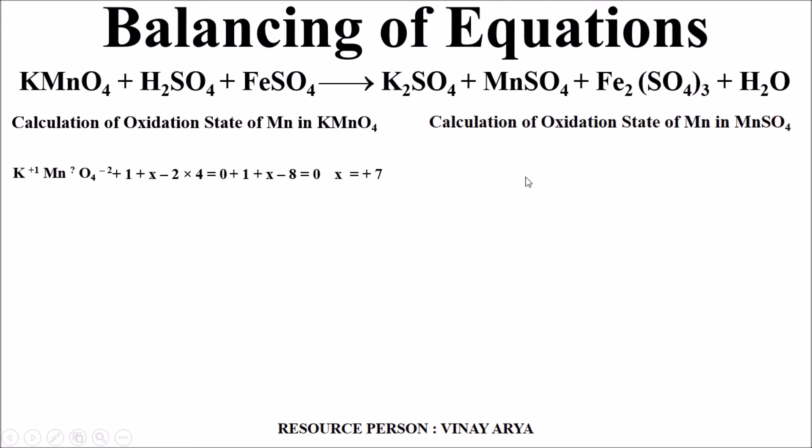Now we are calculating the oxidation state of Mn in MnSO4. In MnSO4, only two ions are there, sulfate is -2. So assuming Mn to be x, the equation is x - 2 = 0 and x becomes equal to 2. Now see over here.